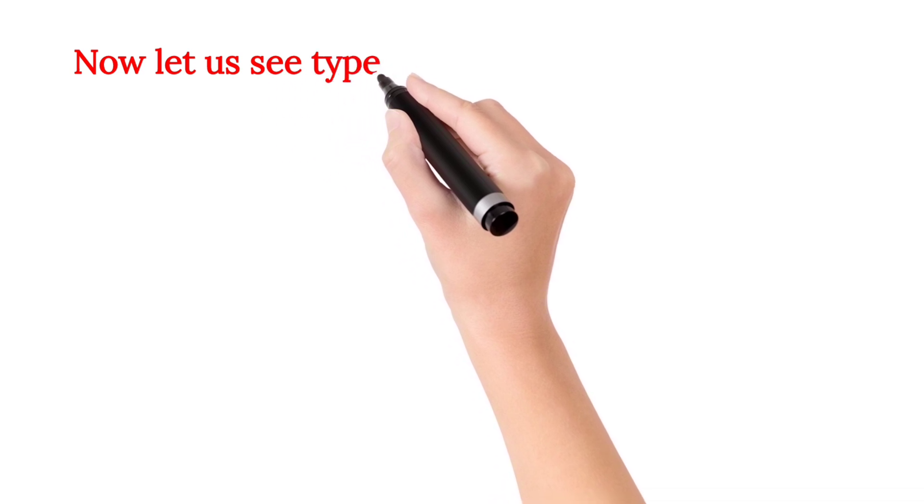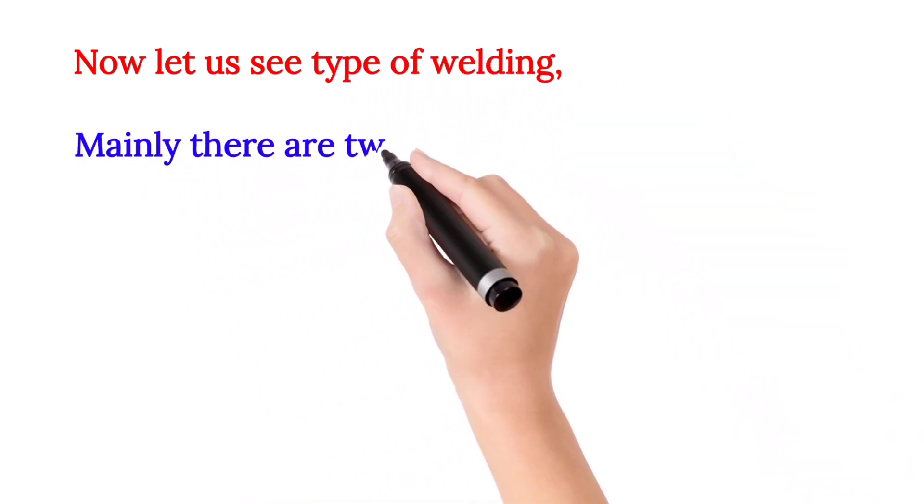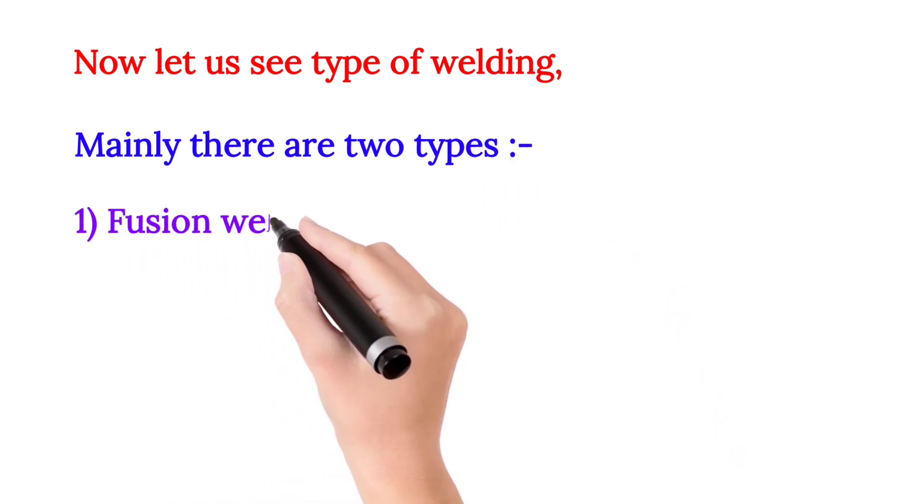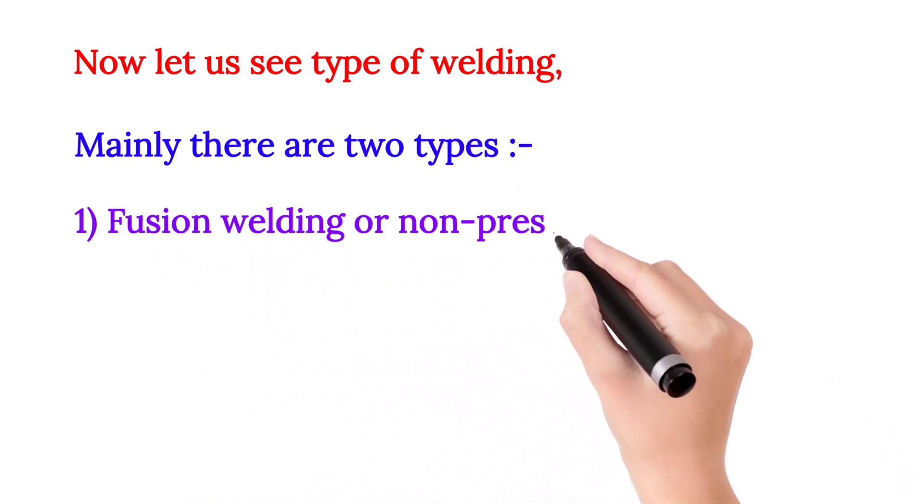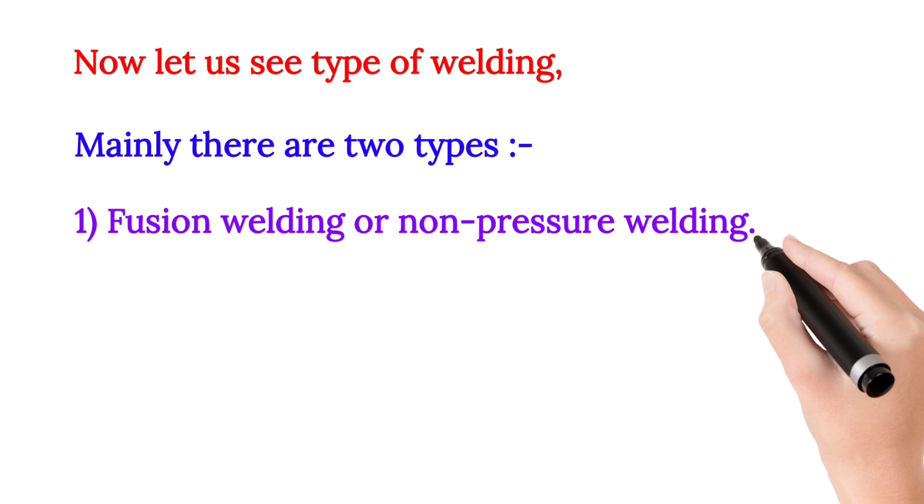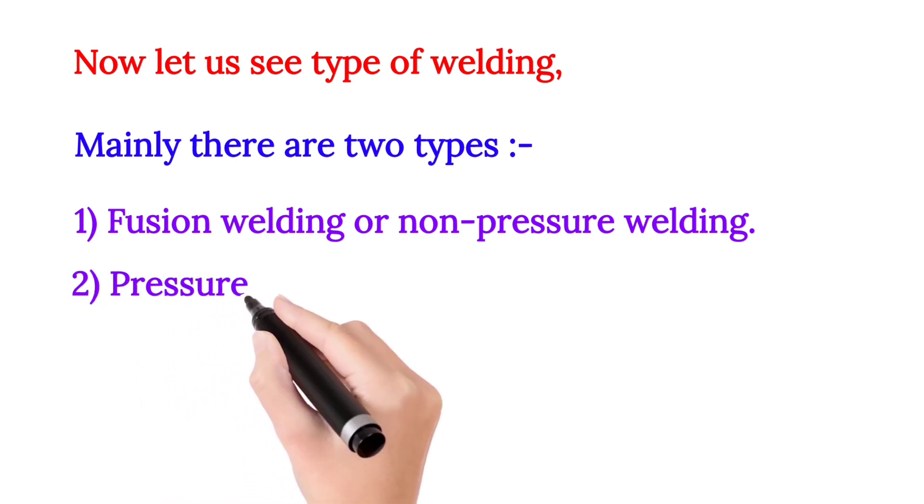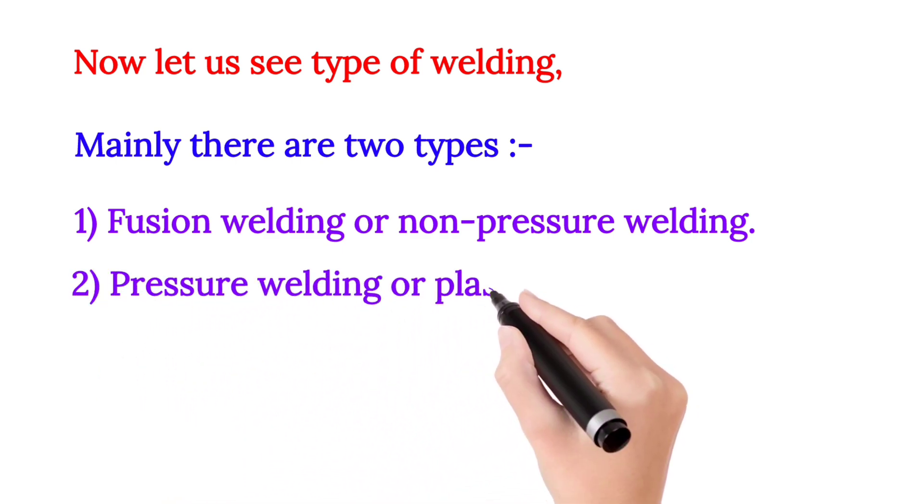Now, let us see types of welding. Mainly there are two types. Number 1: Fusion welding or non-pressure welding. Number 2: Pressure welding or plastic welding.